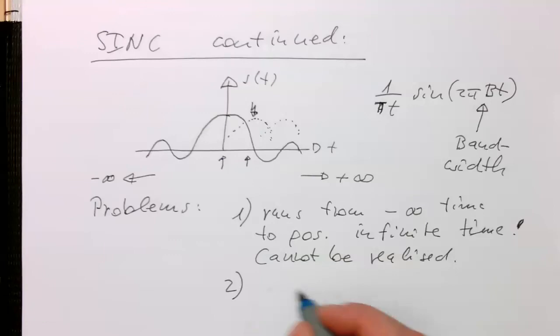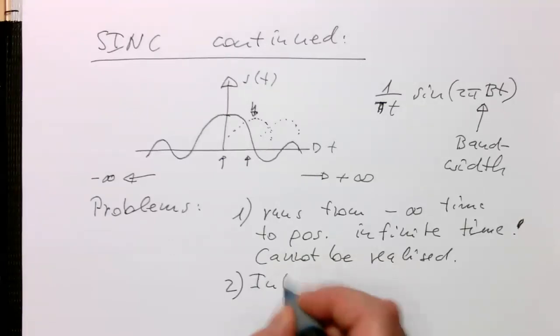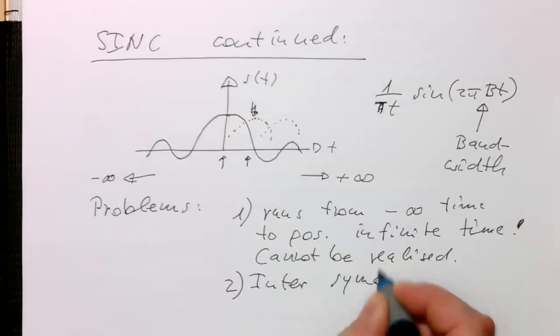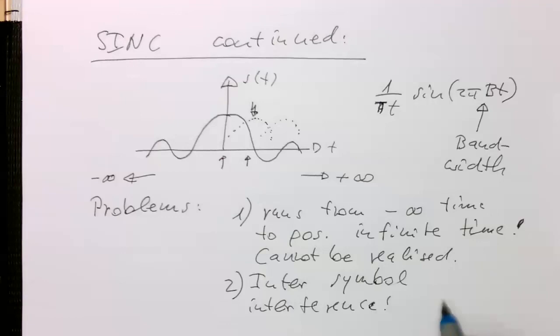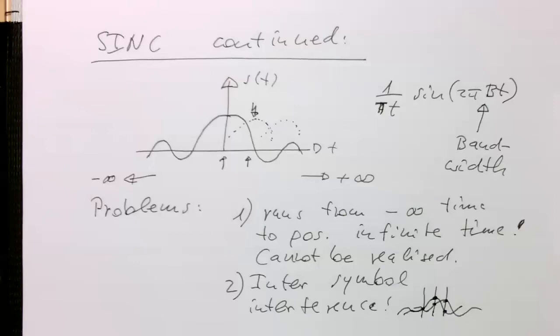So problems, the second problem is, we're getting so-called inter-symbol interference. And so, just because of the fact that now this is running from negative time to positive infinite time, and therefore, we have to deal with these wiggles here. And so, if this is our sinc function here, and this is our actual symbol, and then the next one would just start, for example, here. Then we had interference between these two symbols, for example. And then this continues here. So we also had interference here. So the question is, can we fix that?